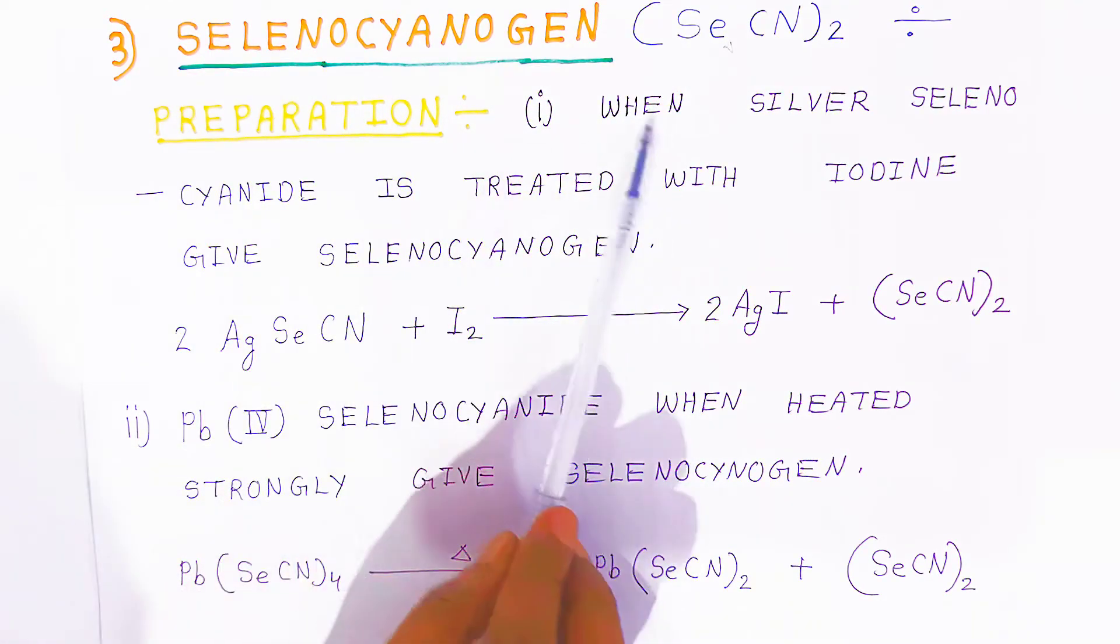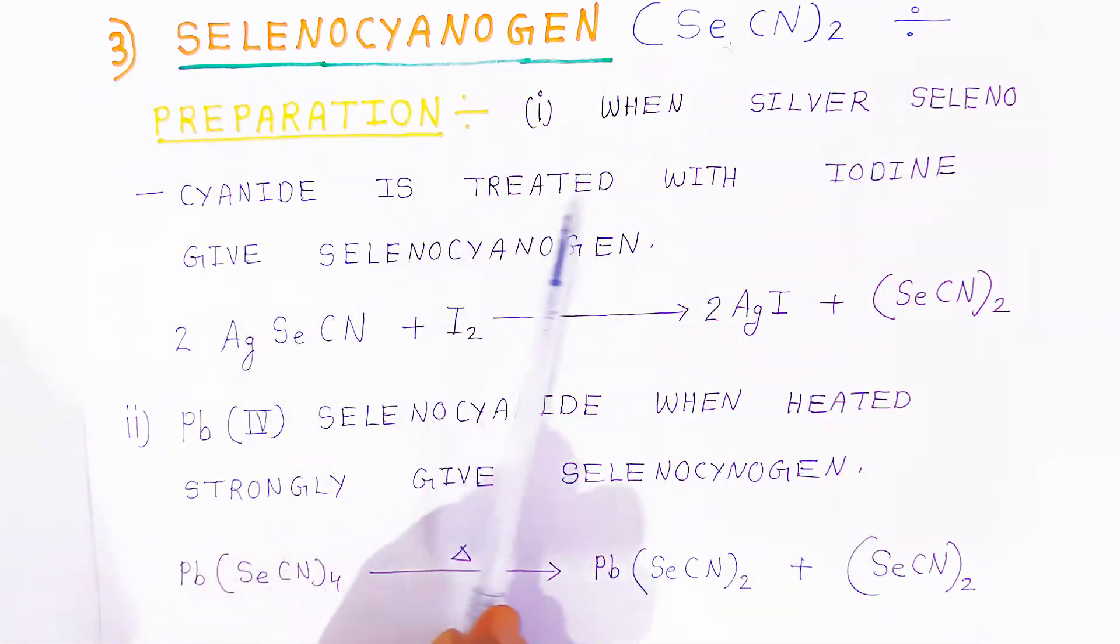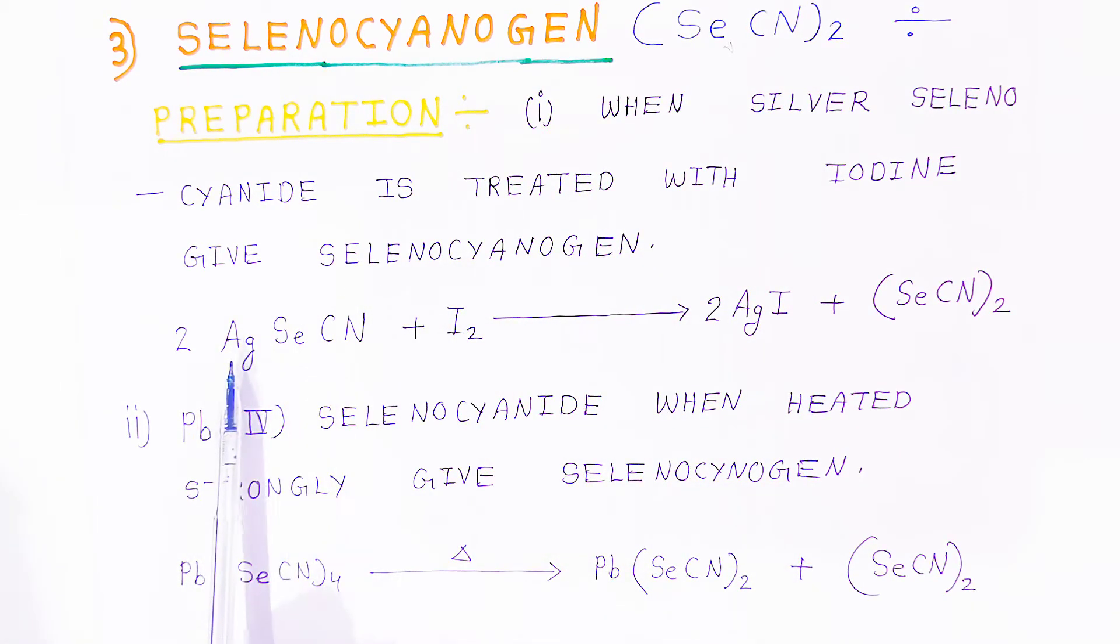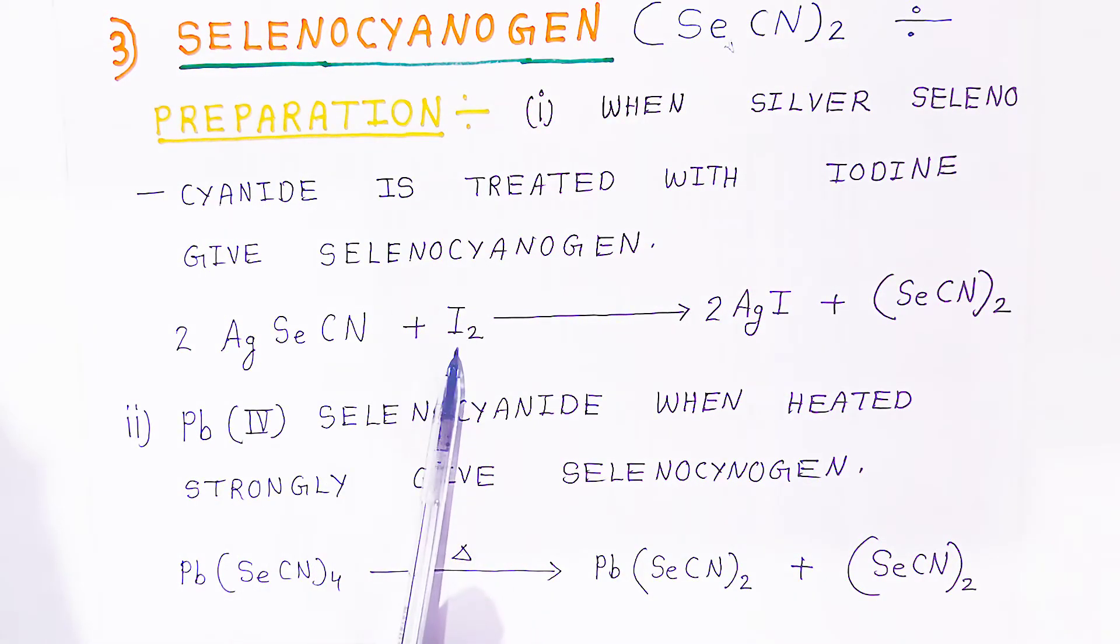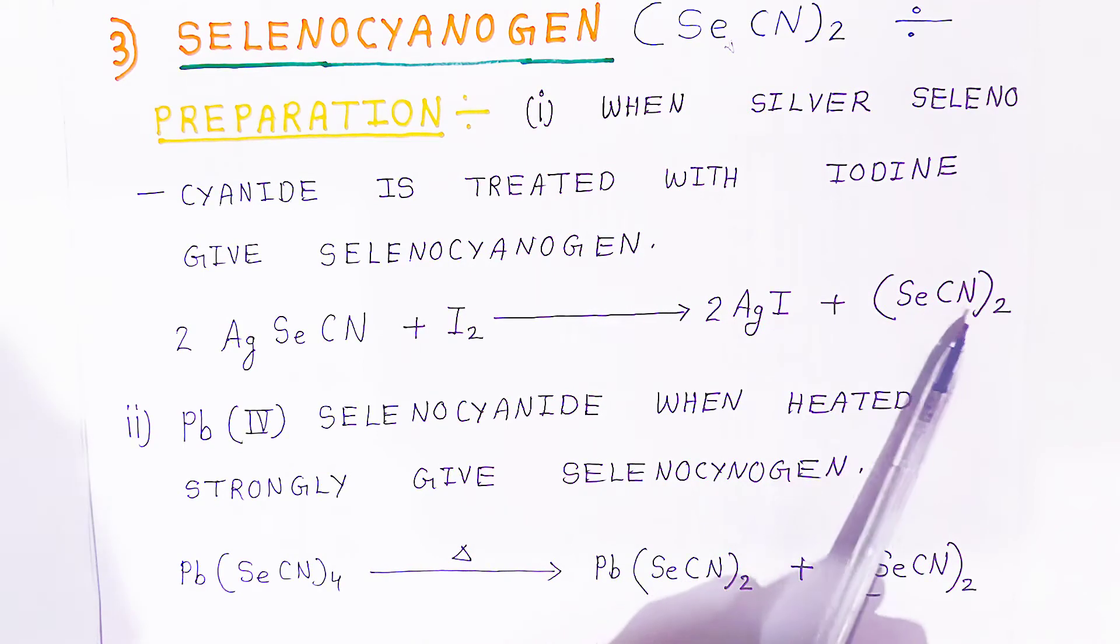Preparation: when silver selenocyanide is treated with iodine, it gives selenocyanogen. So if you treat silver selenocyanide with iodine gas, you are getting silver iodide and selenocyanogen.